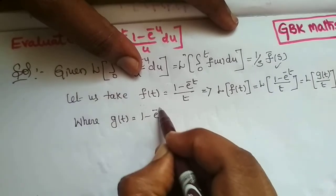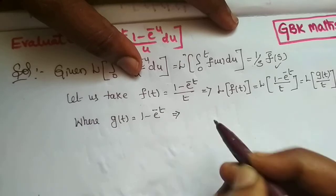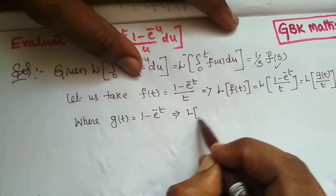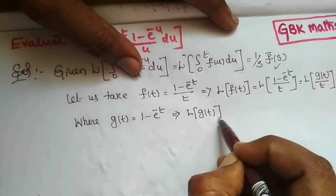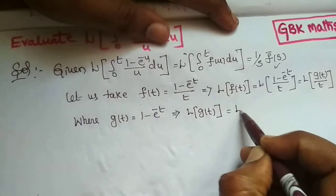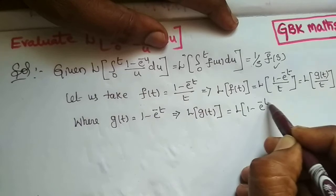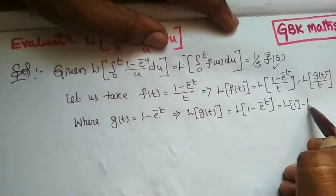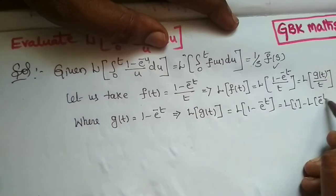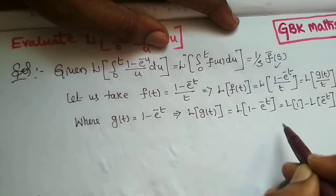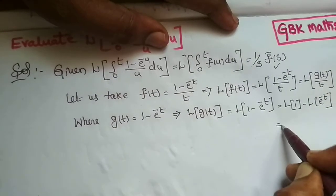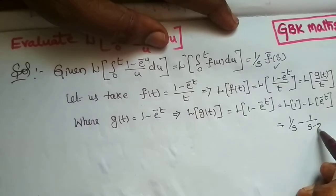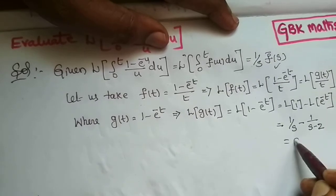Using the division-by-t property, let g(t) = 1 - e^(-t), so L{g(t)} = L{1} - L{e^(-t)}. By the linear property, the answer is 1/s minus 1/(s+1). This is g̅(s).